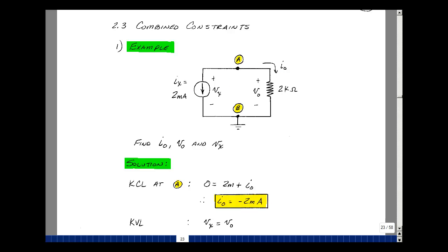The currents that enter equals the currents that leave. Now nothing is entering, and we've got 2 milliamps leaving and I0 leaving, and so then we could solve for I0 as minus 2 milliamps. I'm going to solve for V sub x and V0, and let's see if you can figure out their relationship. If you go around the loop here, the rise in voltage would be V sub x, and the drop would be equal to V0. So V sub x equals V0.